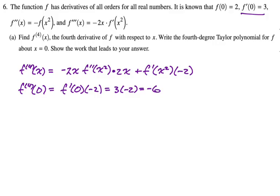Let's try to write this polynomial. So f(x) is approximately, some people like to use P_4 for the fourth degree polynomial. It's going to be the value of the function, which is two. Now it's plus the first derivative, which is three, over one factorial, x minus zero to the first.